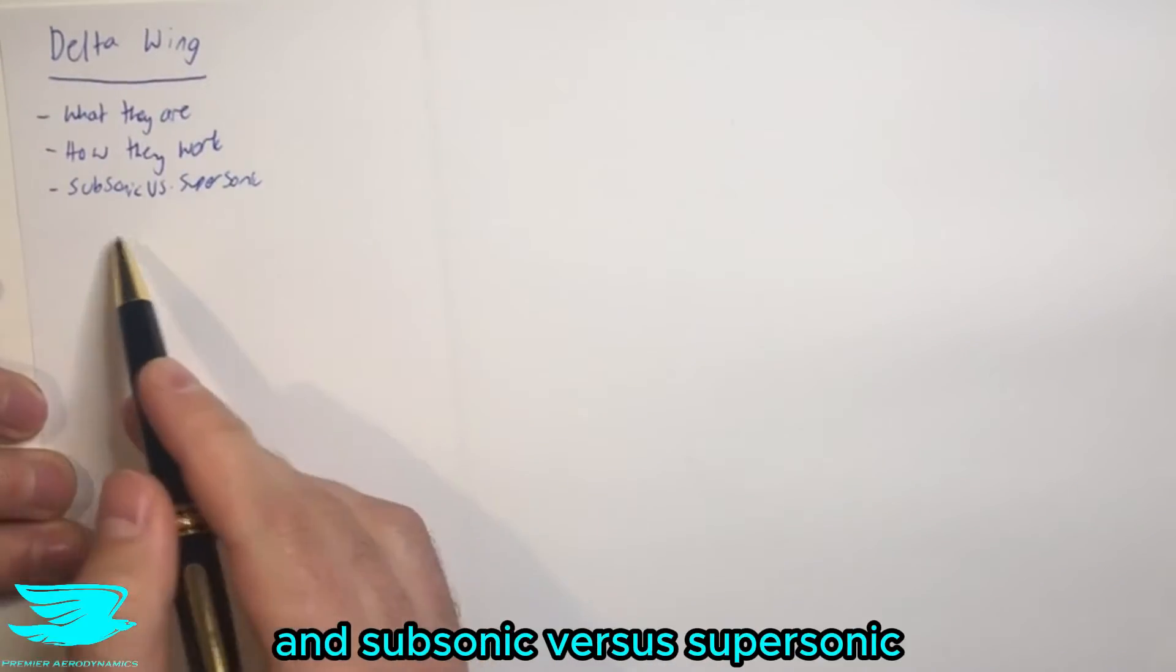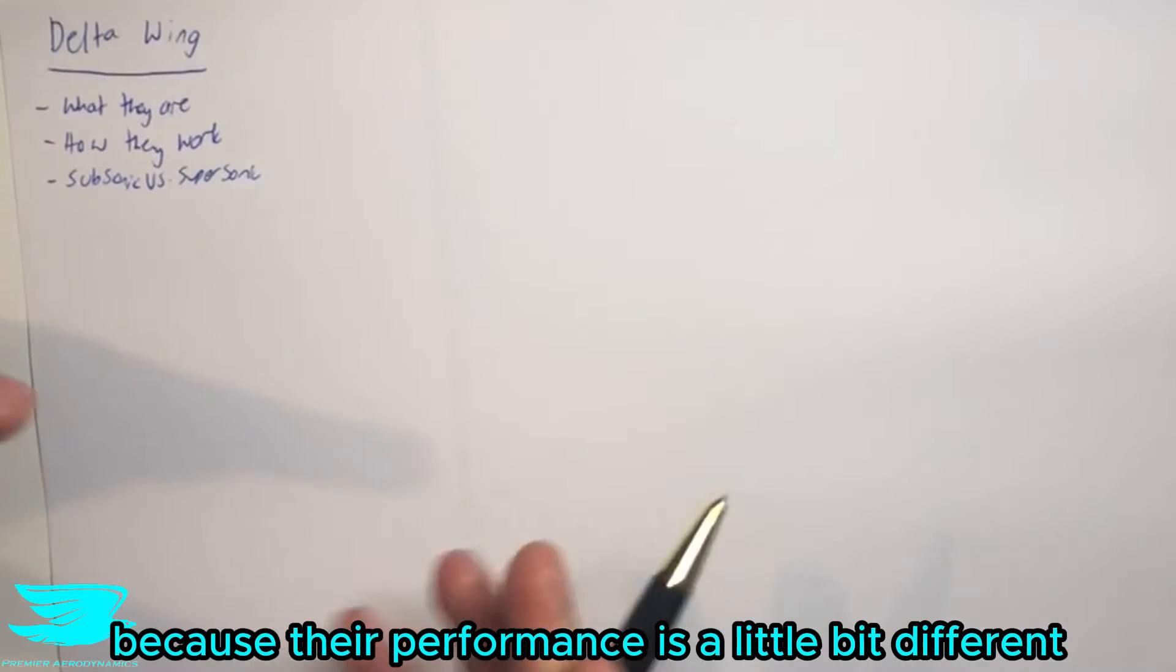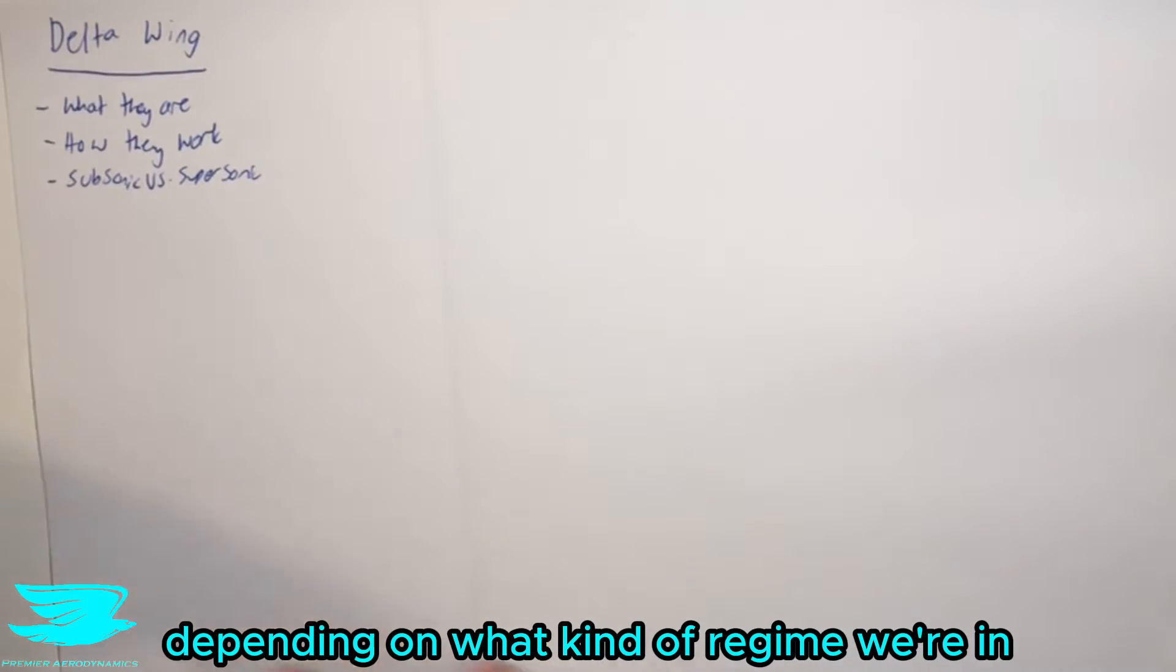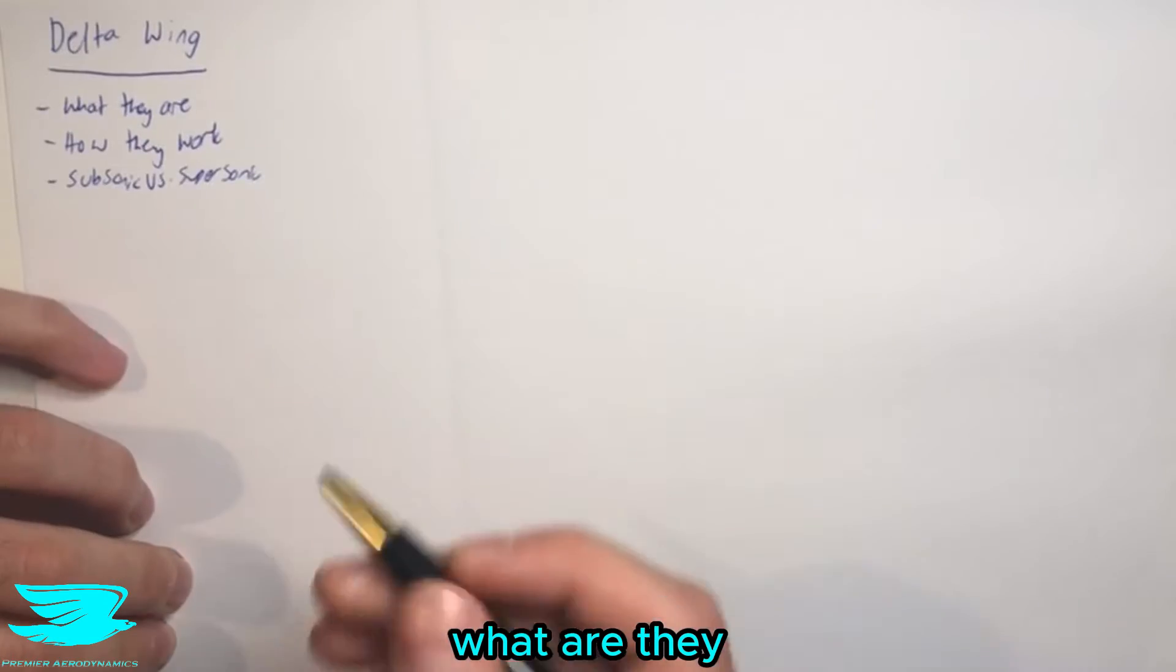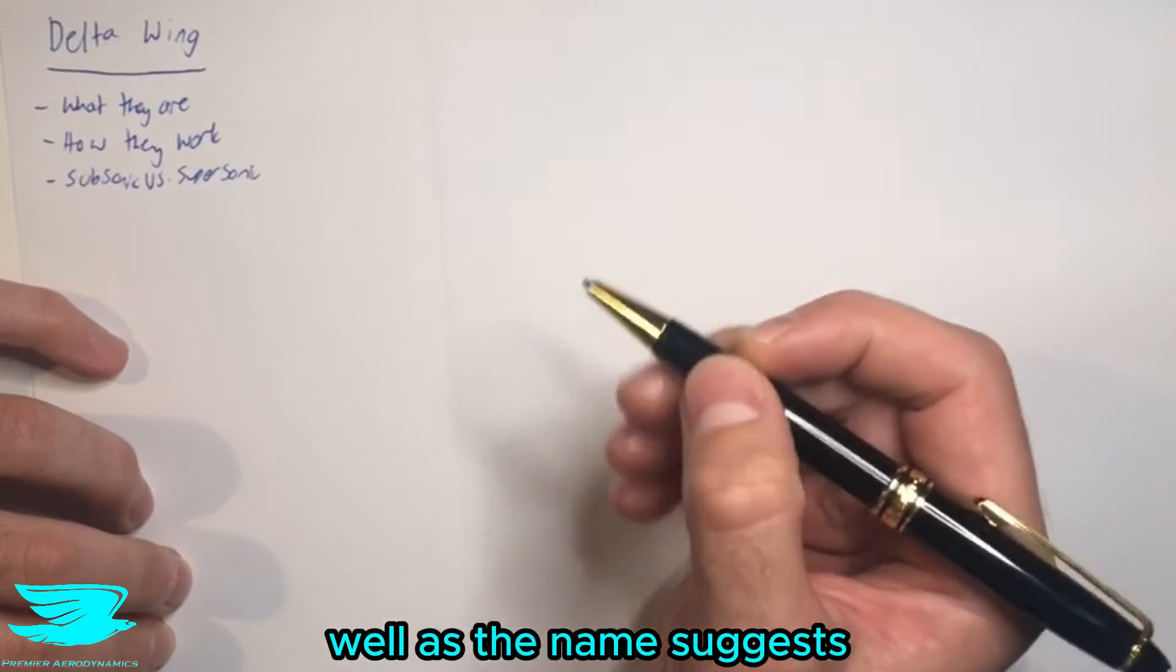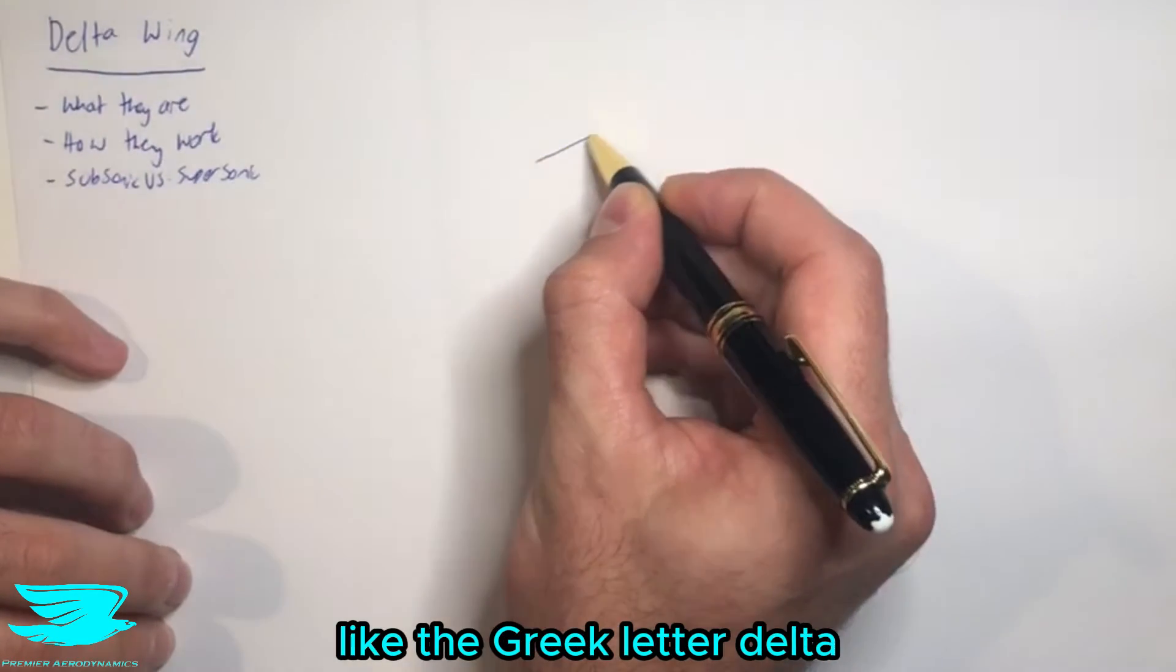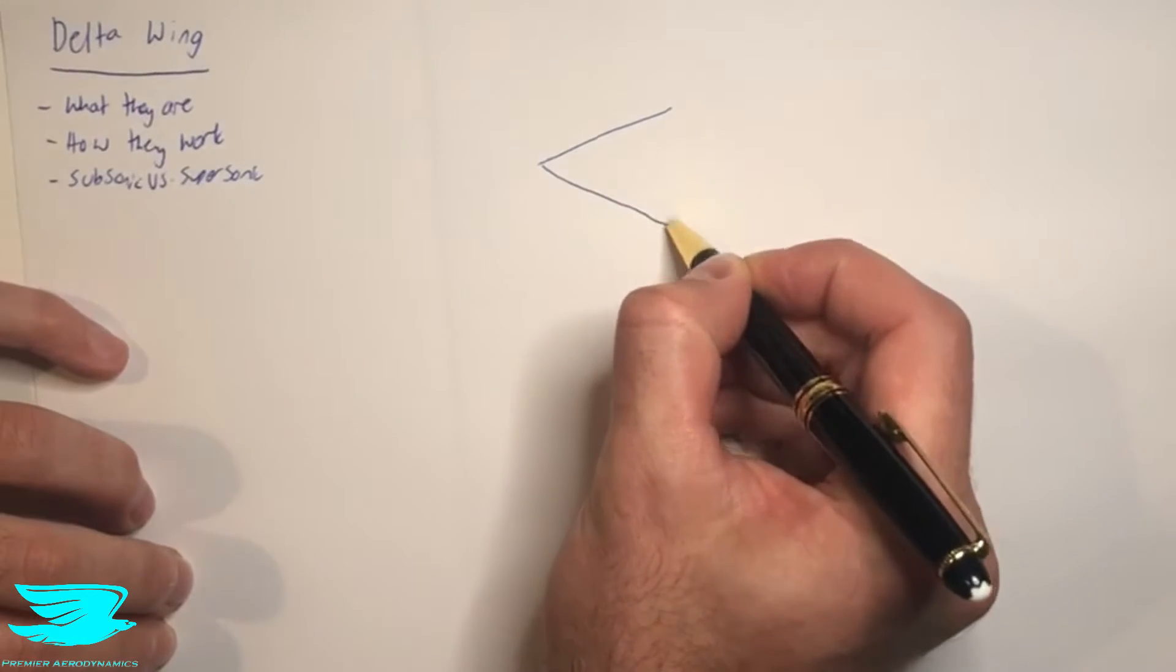We're going through what they are, how they work, and subsonic versus supersonic, because their performance is a little bit different depending on what kind of regime we're in. So first of all, what are they? As the name suggests, they are wings that are shaped as the Greek letter delta, so a triangle.